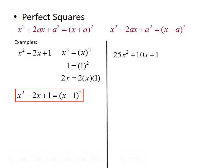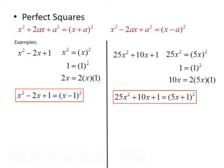Next we try the polynomial 25x squared plus 10x plus 1. Since the middle term has a positive sign, we'll use the first formula. 25x squared can be written as 5x quantity squared, and 1 can be written as 1 squared. Then 10x can be written as 2 times 5x times 1, which matches the formula. So with x being 5x and a being 1, the polynomial 25x squared plus 10x plus 1 factors to be 5x plus 1 quantity squared.